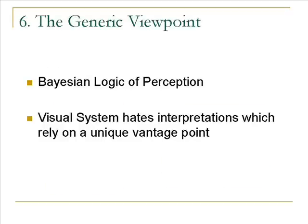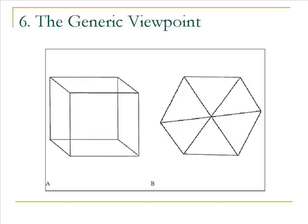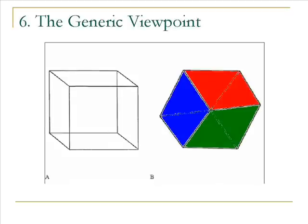The sixth law is the generic viewpoint principle and the Bayesian logic of perception. This refers to the fact that the visual system hates interpretations which rely on a unique vantage point and favors generic ones. For instance, it is easy to see that the figure on the left is a cube from a generic vantage point. However, most people see the image on the right as a flat hexagon with spokes radiating from the middle — this is also a cube, but only a single unique vantage point could produce such a retinal image. Therefore, if an artist is trying to please the eye, he should avoid such coincidences. However, sometimes a pleasing effect can be produced by violating this principle rather than adhering to it.